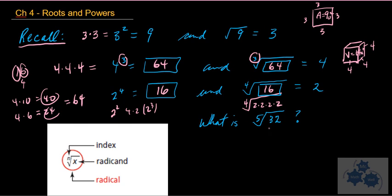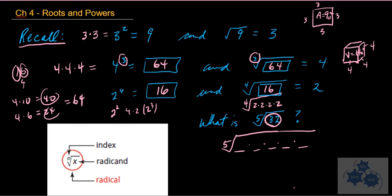What's the 5th root of 32? Without your calculator, how can you write 32 as a product of 5 identical factors? Since 16 is 2 to the 4th, 2 to the 5th is just 16 times 2, which is 32. So because 32 can be written as five 2s multiplied together, the 5th root of 32 is 2.